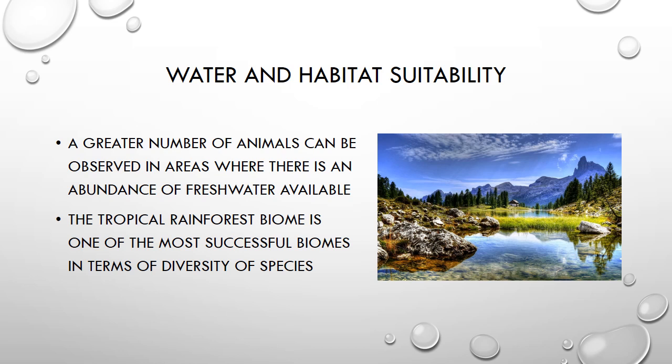The availability of water not only affects animals on an individual level, but can also have a great effect on the presence of animals in an area completely. A great number of animals can be observed in areas where there is an abundance of freshwater available. For example, the tropical rainforest biome, characterized by large amounts of precipitation, is one of the most successful biomes in terms of diversity of species.